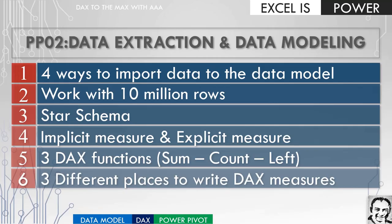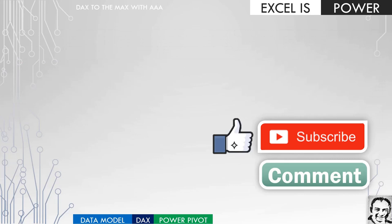That was a very long video. We looked at four ways to import data into the data model — the best being Power Query. We saw how to work with 10 million rows very easily using the data model. We covered the star schema concept and how it works. We examined implicit vs. explicit measures and the difference between them. We used five DAX functions: SUM, COUNT, LEFT, YEAR, and LEN. Finally, we looked at three different places to write DAX measures inside Excel. If you're not subscribed yet, please do so. Like the video if you liked it, leave a comment, and see you in the next video.